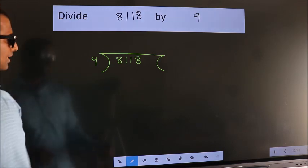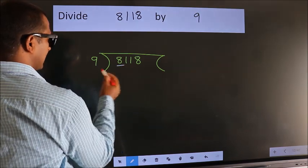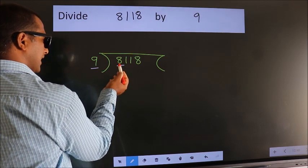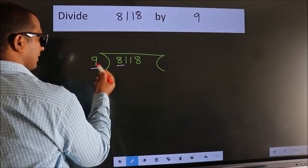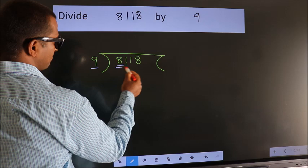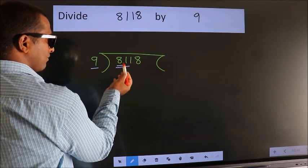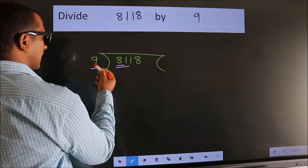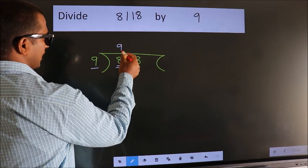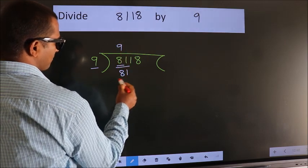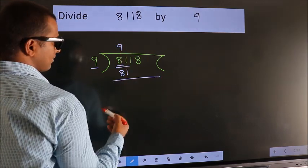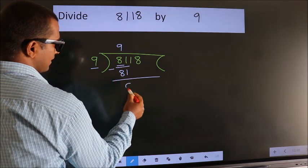Next. Here we have 8, here 9. 8 is smaller than 9, so we should take 2 numbers: 81. When do we get 81 in the 9 table? 9 times 9 is 81. Now we subtract and we get 0.